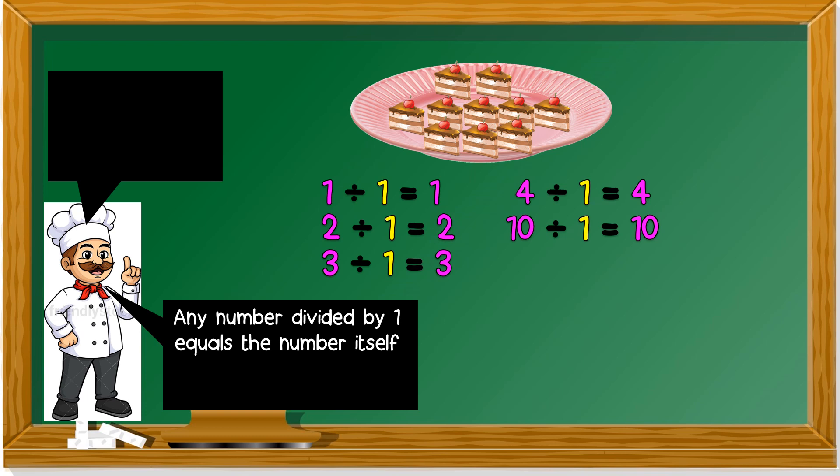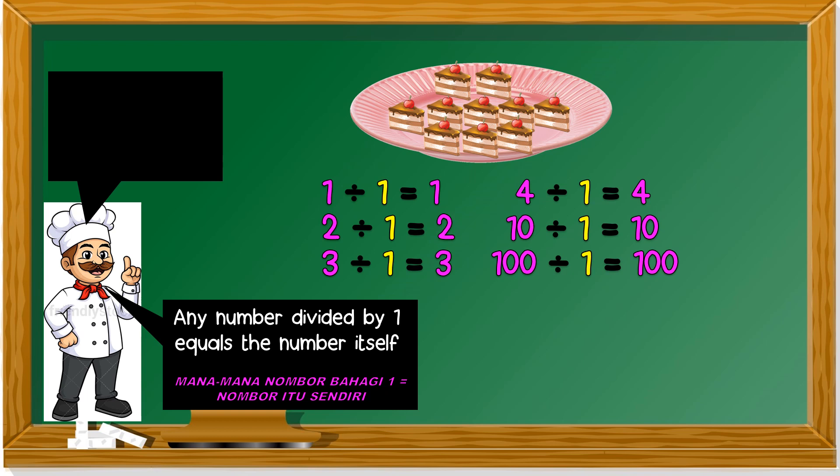Any number divided by 1 equals to the number itself. Mana-mana nombor bila bahagi dengan 1 sama dengan nombor itu sendiri. For example, 100 divided by 1 is still 100. 500 divided by 1 is still 500. Any number divided by 1 equals to the number itself — mana-mana nombor kita bahagi 1, jadi balik nombor itu sendiri.